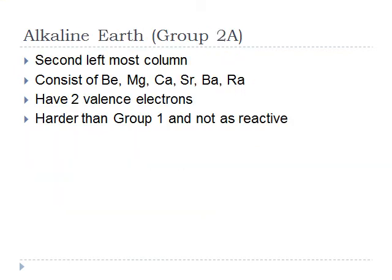On the right-hand side of the alkali metals lies the alkaline earth metals, or Group 2A. It consists of beryllium (Be), magnesium (Mg), calcium (Ca), strontium (Sr), barium (Ba), and radium (Ra). These elements have two valence electrons in the outermost shell. They are harder metals than Group 1 and are not as reactive as their Group 1 counterparts.